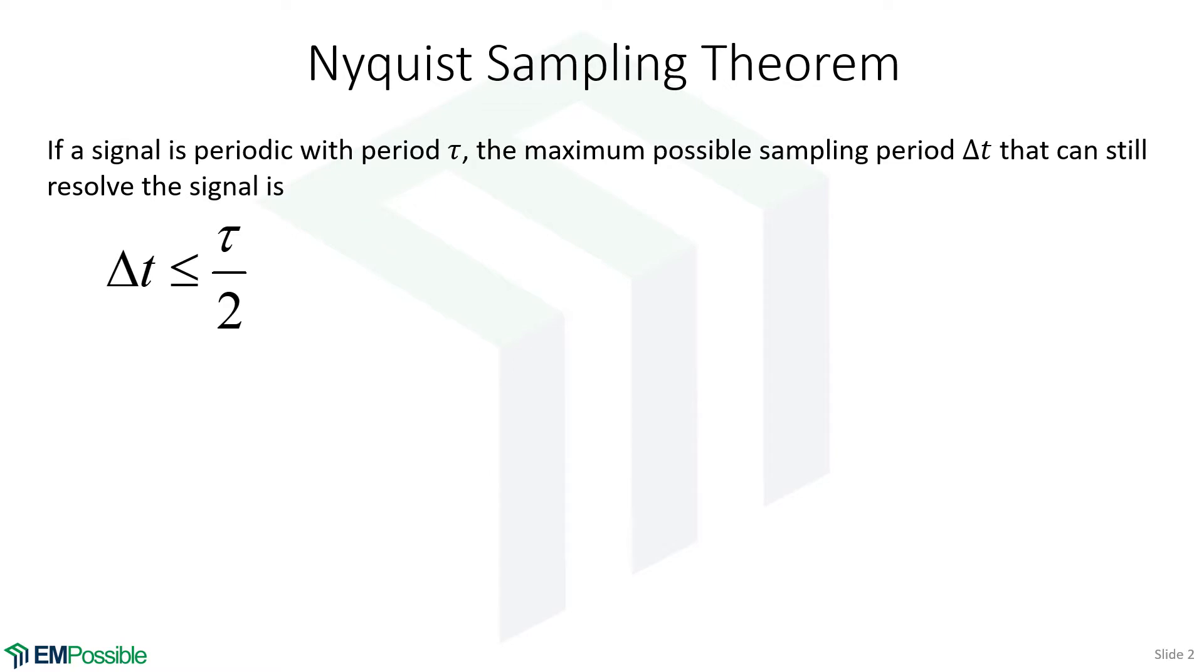Before we know how to format the frequency axis of a plot, let's discuss the Nyquist sampling theorem. If we have a signal with a period tau, that implies there's a maximum possible sampling period that we need in order to resolve that signal. Essentially, we need to sample a signal at a maximum half the period of the signal. So for every period, we need at least two samples.